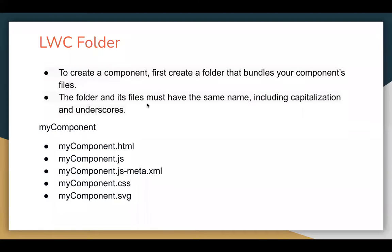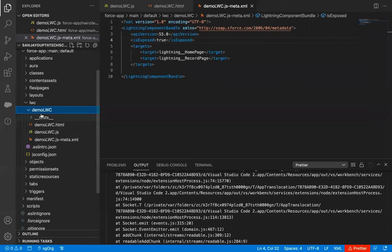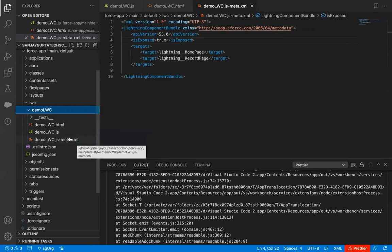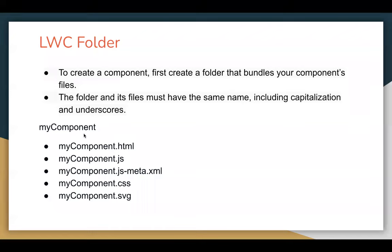The folder and its files must have the same name, including capitalization and underscore. Here you can see the folder name is demo LWC, and the HTML, JavaScript, and XML files all have the same name. Whenever we create any component, the .html, .js, and .xml files are created automatically. But later on, if you want to create a .css or .svg file, those you need to create manually.